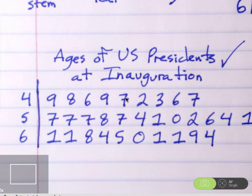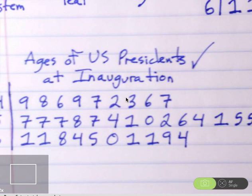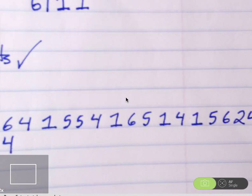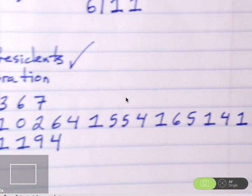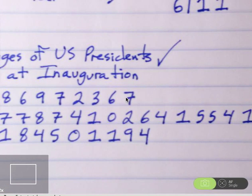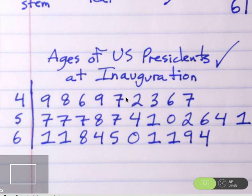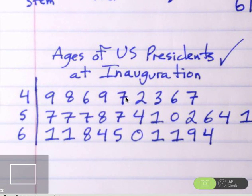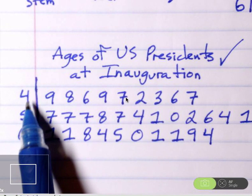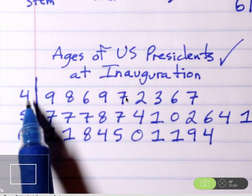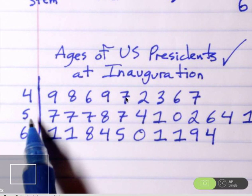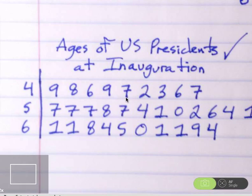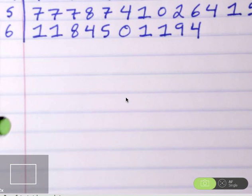So notice there aren't that many fours and sixes, but there are a whole lot of presidents that were in their 50s when they were inaugurated. So it might be helpful to get a better idea of the shape of this graph to do what's called splitting the stems. So literally, instead of one group of 40s and 50s and 60s, we're going to split the 40s into the lower and upper 40s, same thing for the 50s, and same thing for the 60s.